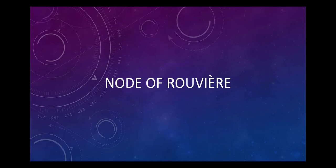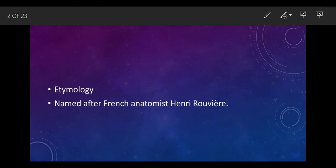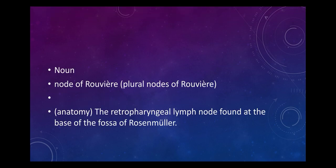Node of Rouvier — please note the spelling: R-O-U-V-I-E-R-E. It is named after French anatomist Henry Rouvier. If plural, it is pronounced as 'nodes of Rouvier,' referring to the retropharyngeal lymph nodes found at the base.